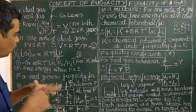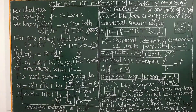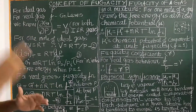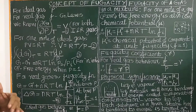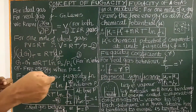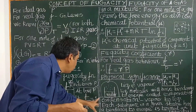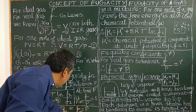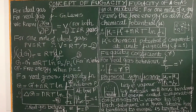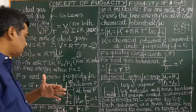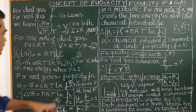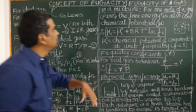At low pressure, the real gas becomes ideal. Remember, at low pressure, the real gas becomes ideal. Therefore, when pressure tends to 0, F/P equals 1. Therefore F/P = 1, then F = P. That is, the fugacity is equal to the pressure of a gas at low pressure or for an ideal gas. For a real gas, only the fugacity becomes equal to pressure at low pressure.